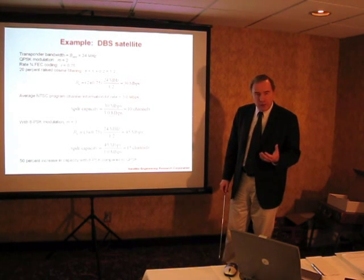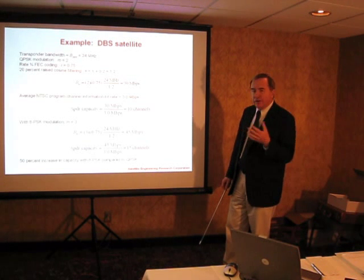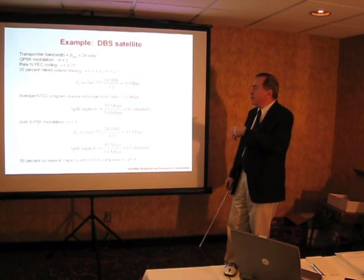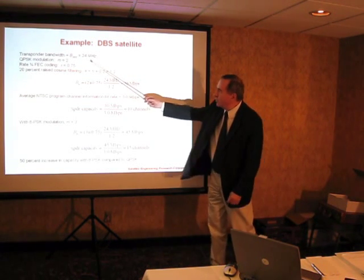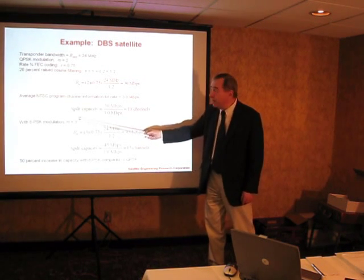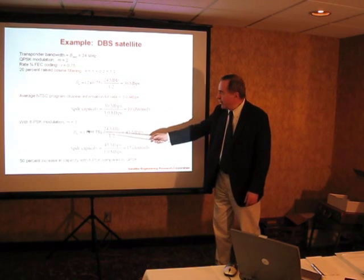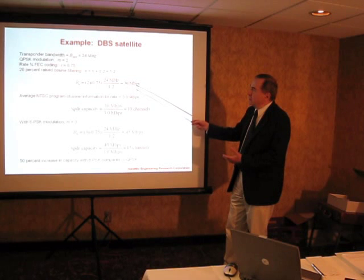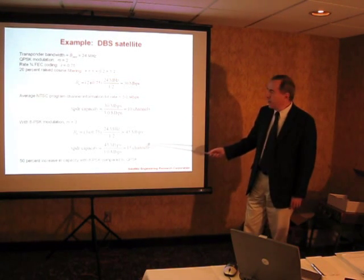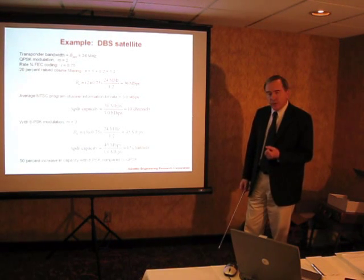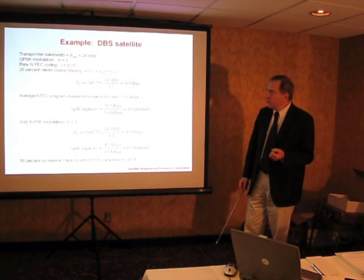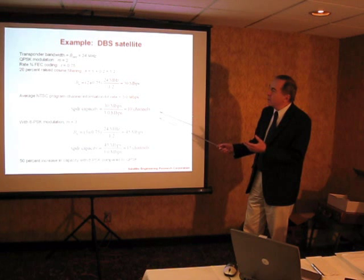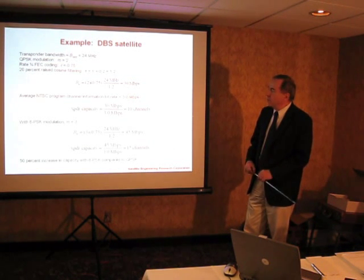There is further demand for more capacity, more channels, or higher definition television — HDTV instead of standard definition TV. One would consider what would happen if you went to a higher-order method of modulation. Let's go beyond QPSK. Consider, for example, 8PSK, where there are three bits per symbol. So instead of having a factor of two, we have a factor of three. The data rate that can be supported is now 45 megabits per second, and under the same assumptions we can now have 15 channels per amplifier. Thus, we have achieved an increase in capacity of 50% compared to QPSK. This is an example of the trade-off between power and bandwidth, and shows how the basic bandwidth relationship can be used to determine the data rate that can be supported.